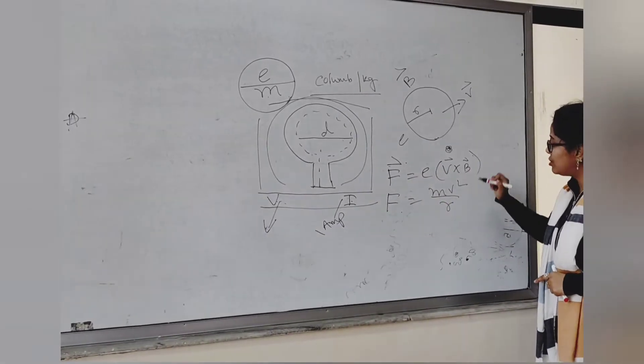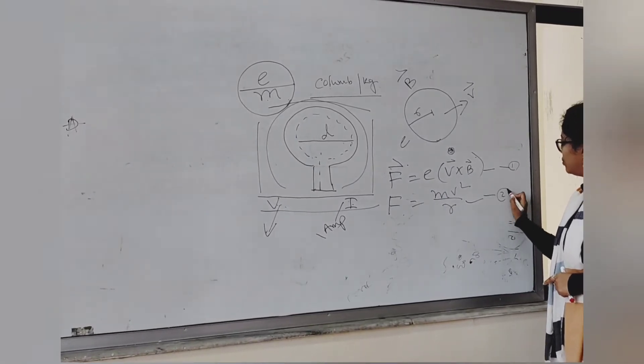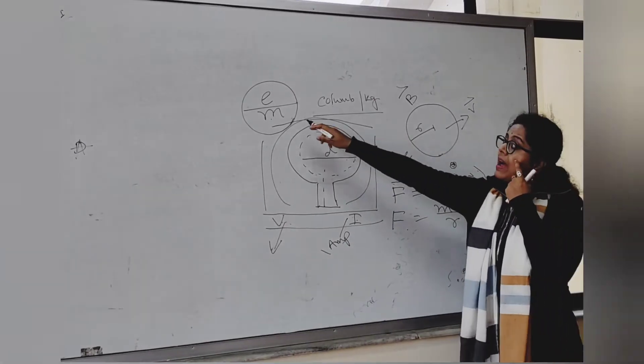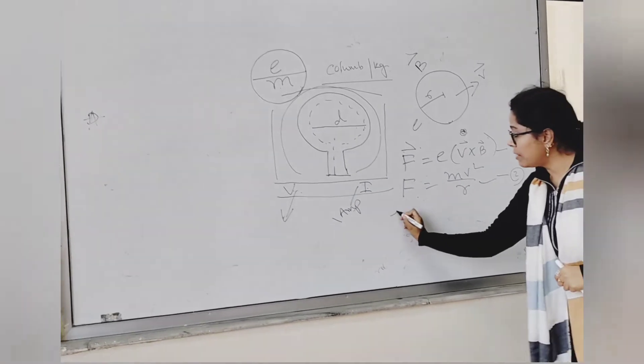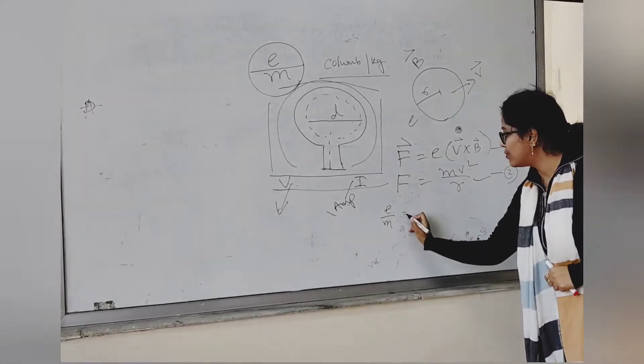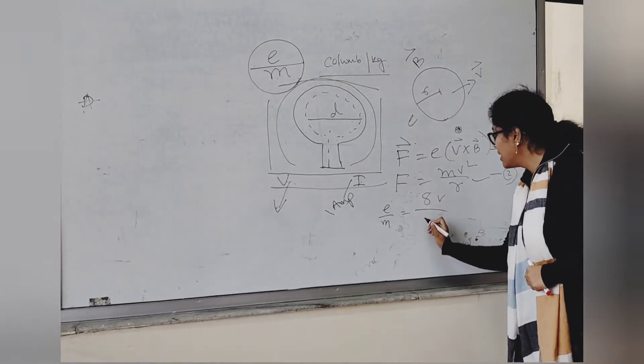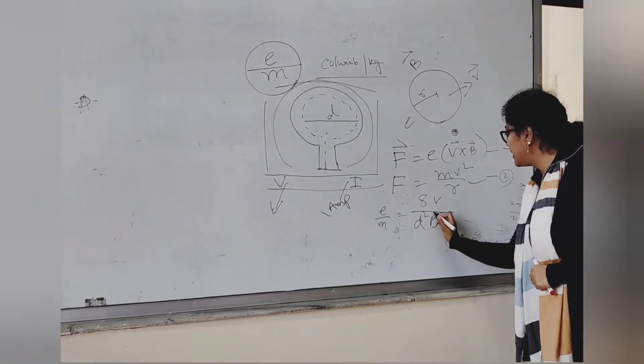If we equate these two equations, equation number 1 and equation number 2, we are going to get the e by m formula. Now what is the working formula? The working formula of e by m equals to 8 V by D squared capital B squared.